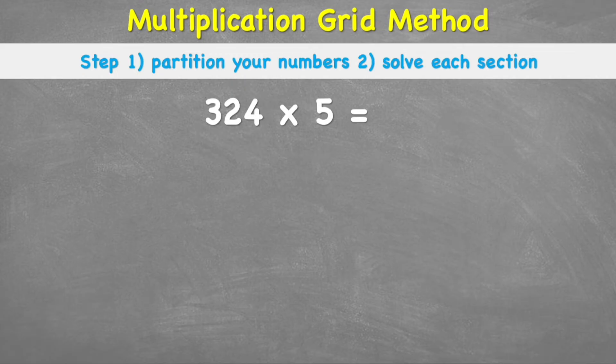So at the moment, my 324 looks pretty horrible. It's huge. So I want to break it down. So I'm going to partition this number first and then use those parts to do my calculation. So I should know that my 324 is made up of a 300, a 20 and a 4. These are my partitioned chunks of this number.